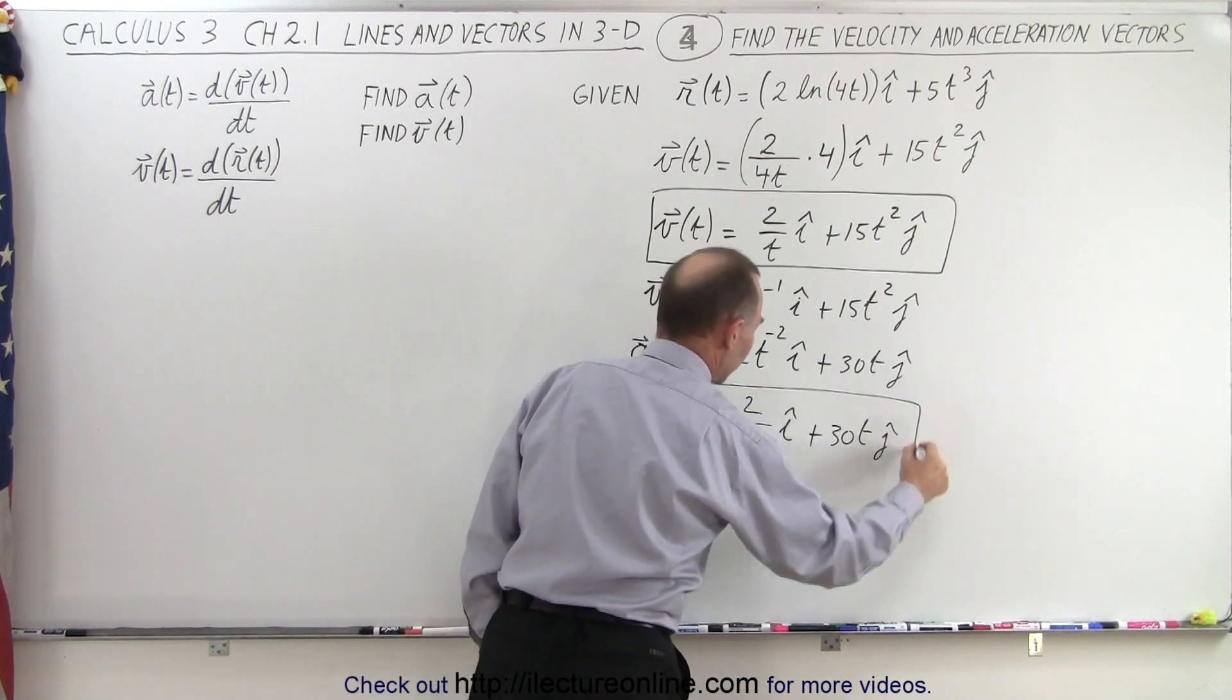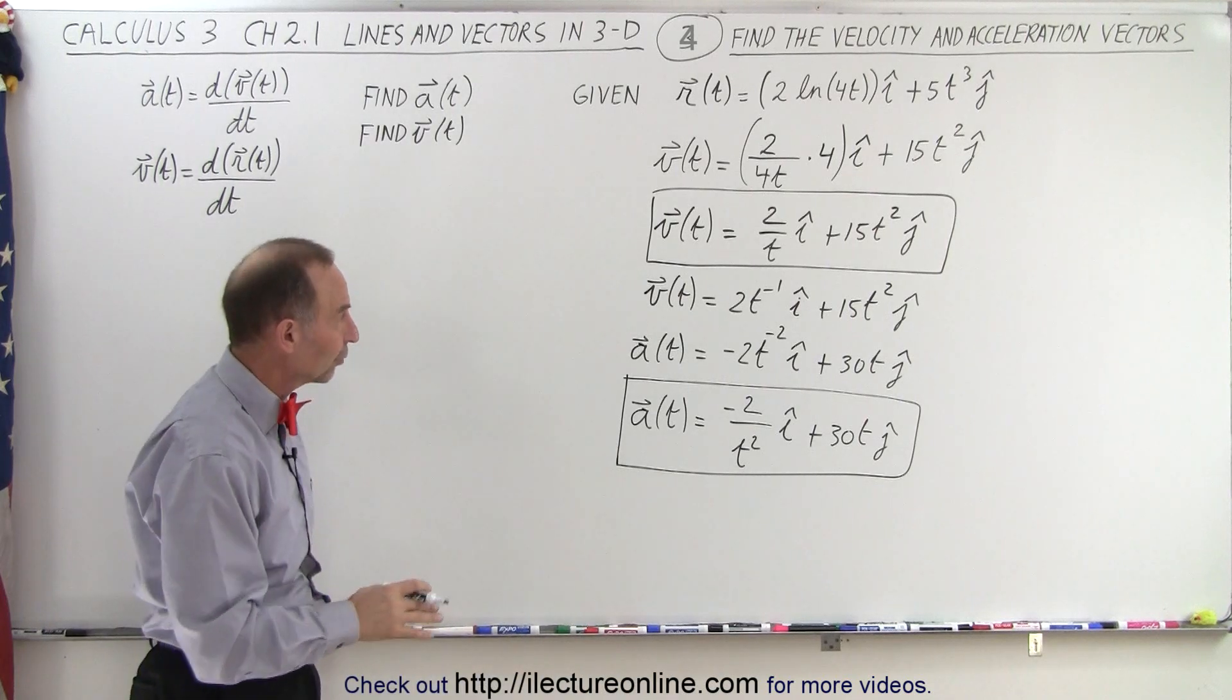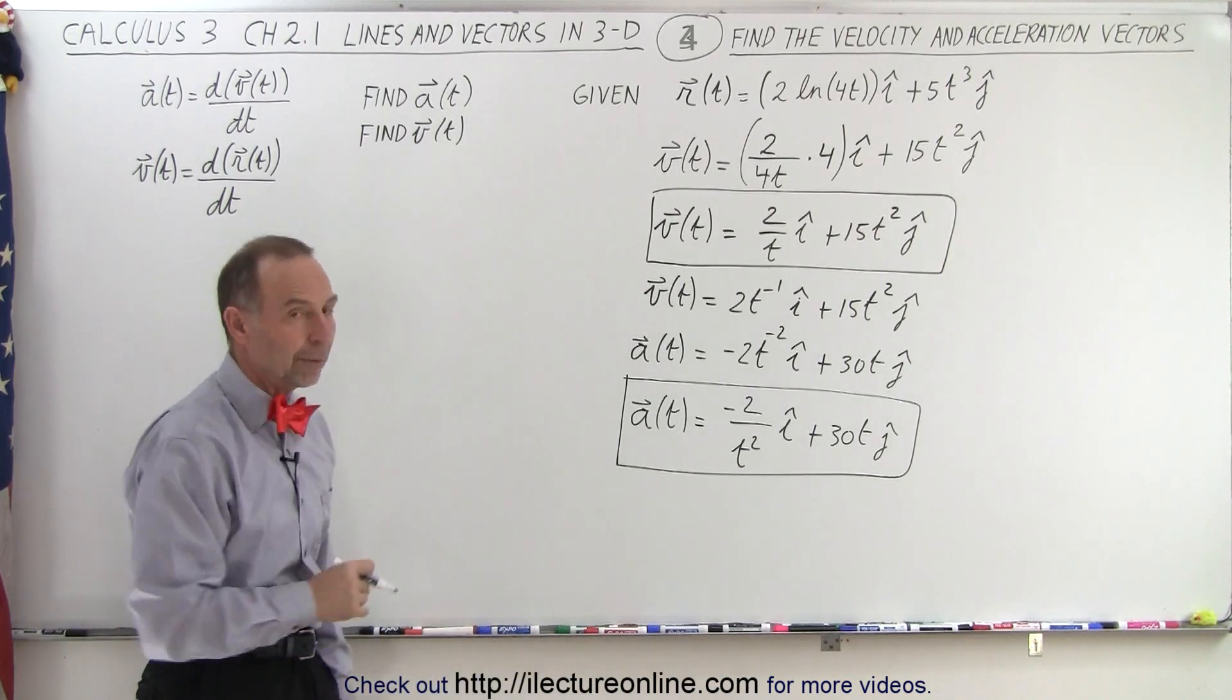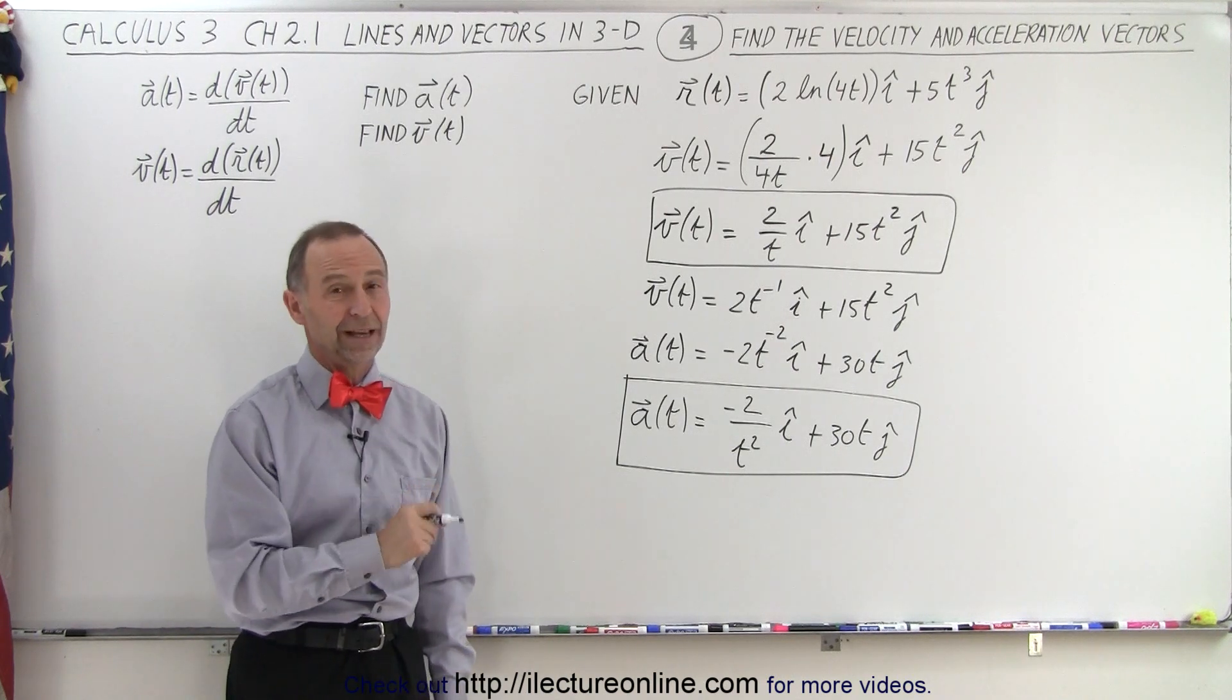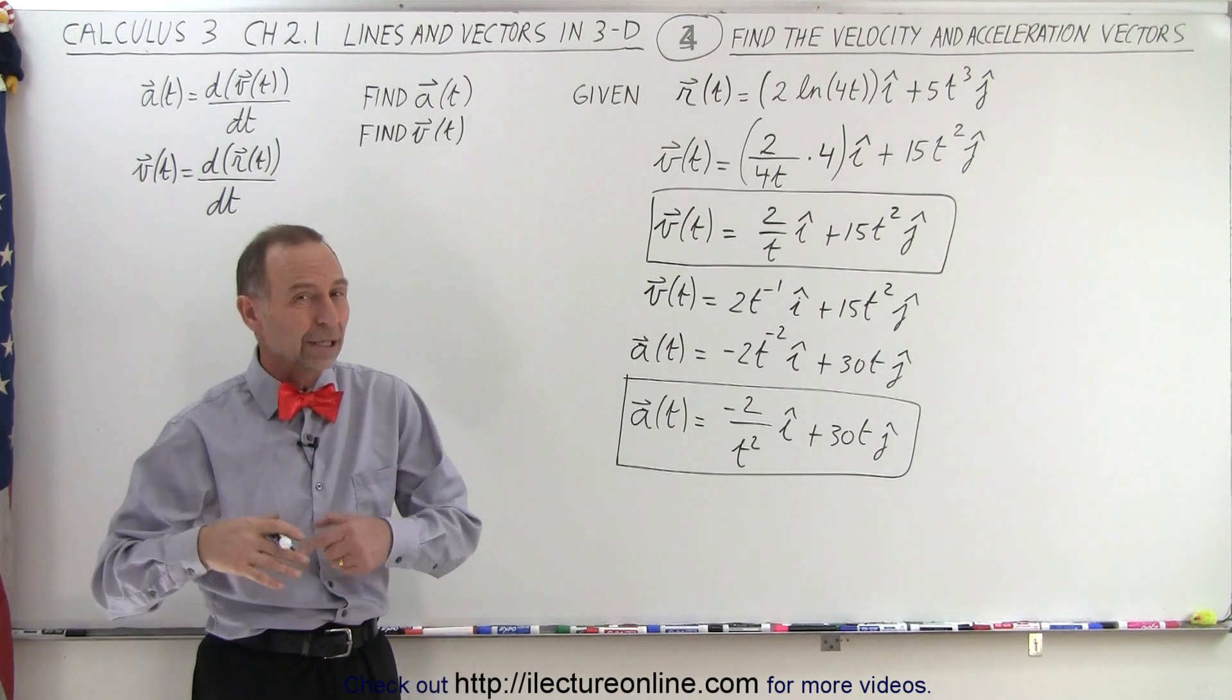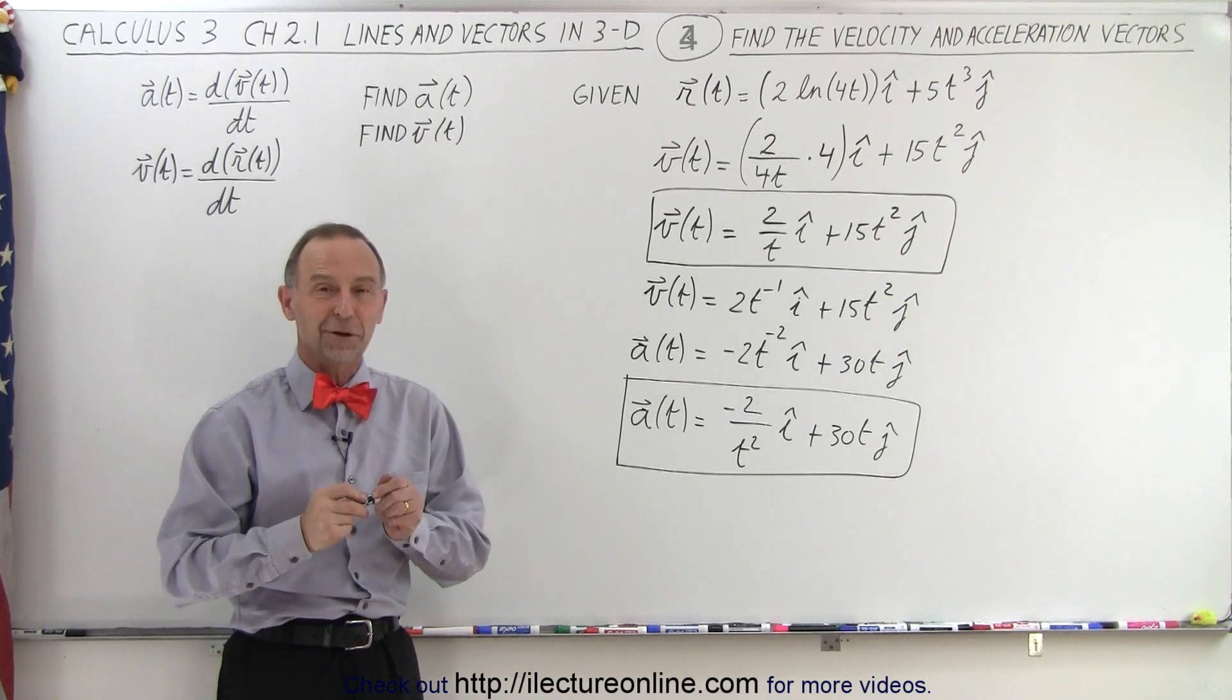So you can see that simply by using the derivatives, we can convert a position vector to a velocity vector to an acceleration vector. But now, of course, how do we use these vectors, and how do we apply that to getting the equation of lines? Well, that will come in the next videos. So stay tuned.